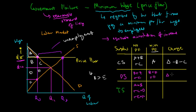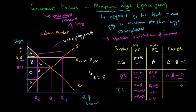The total surplus with the price floor is A plus B plus D plus F. Comparing this to the original total surplus, the change is negative C minus E, which is represented by this area on the graph. This represents a deadweight loss — resources or labor that are not being utilized to their fullest potential, as they would have been at the equilibrium of Q1 and ten dollars.